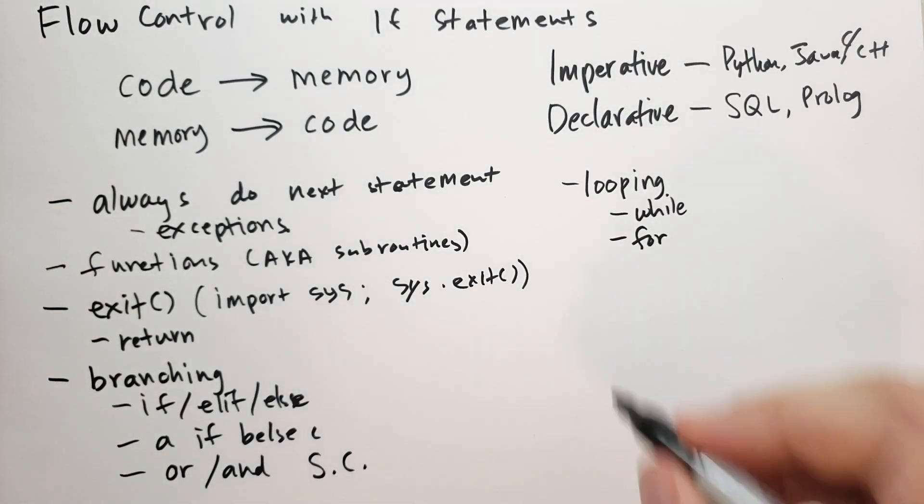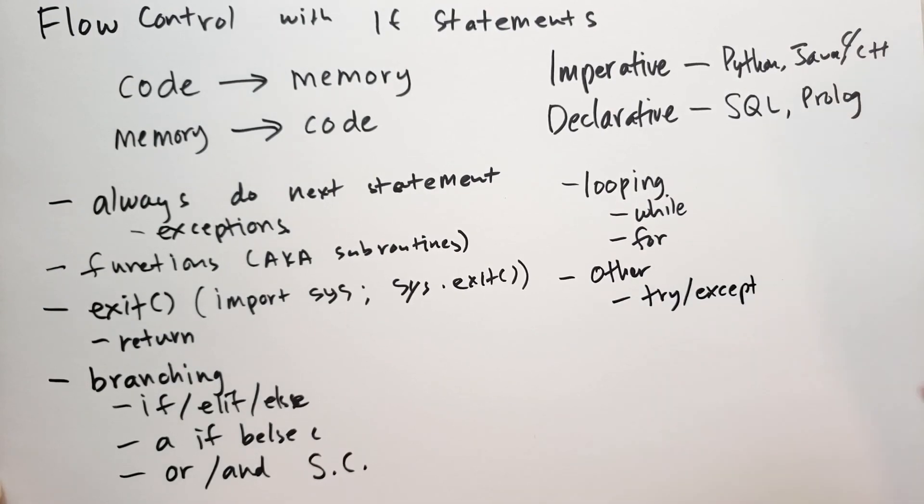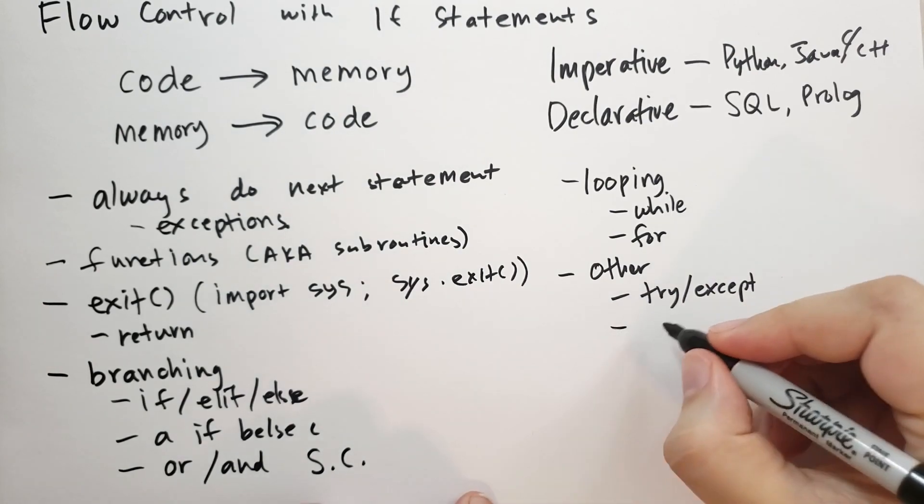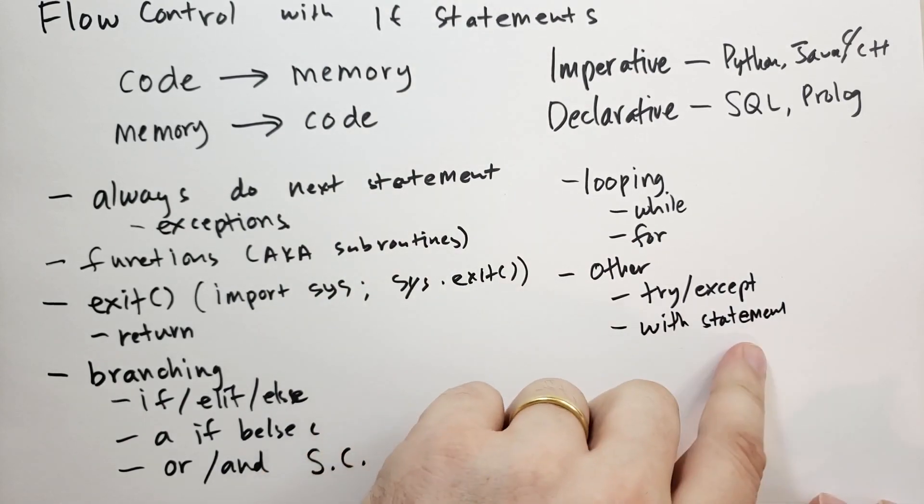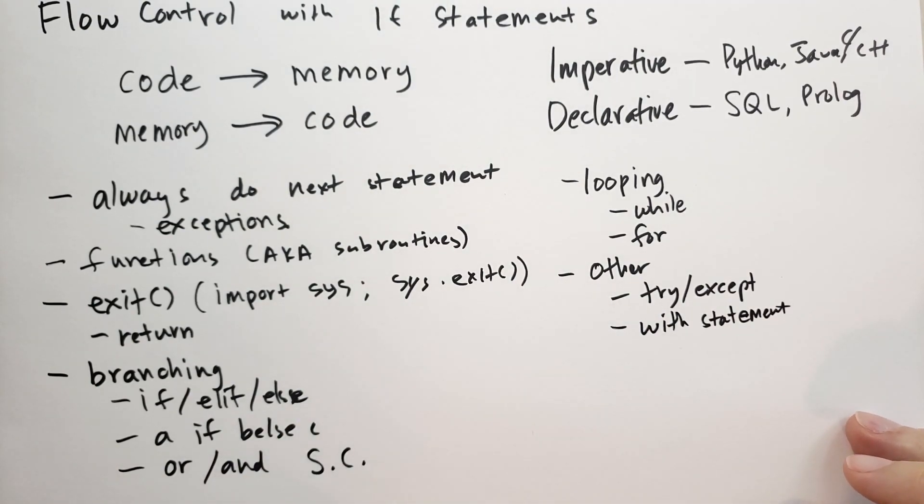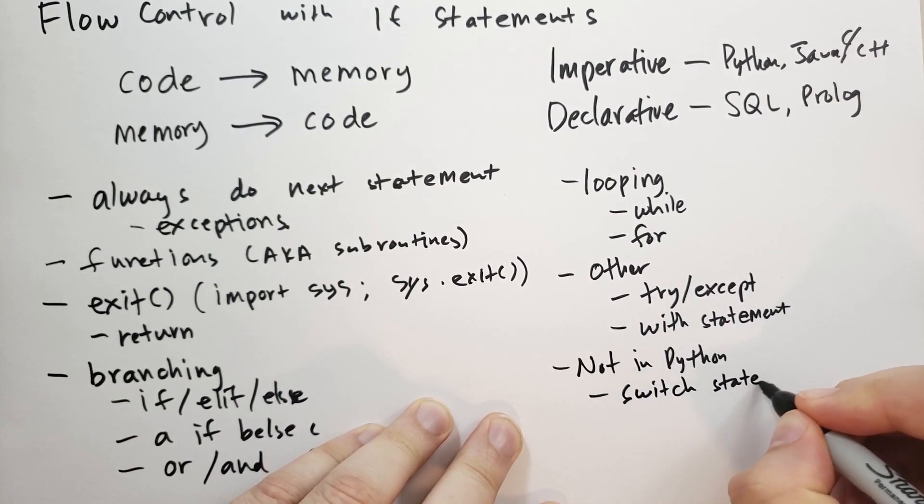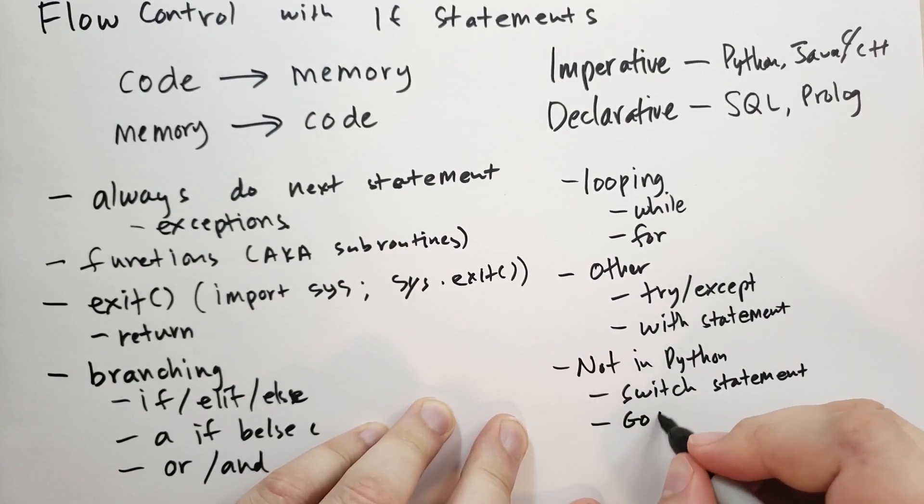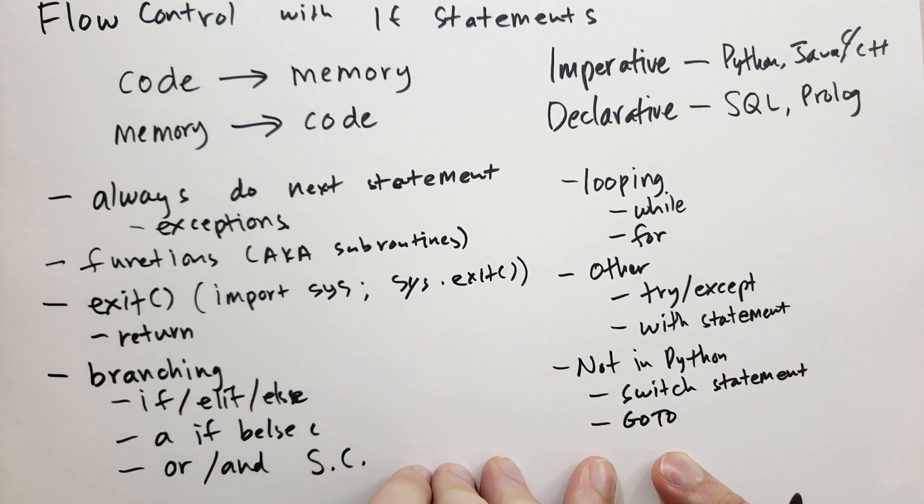Then we have try—let's call these other or miscellaneous. We have try except exception handling. If there's an exception raised, run this special bit of code. We also have the with statement, which we haven't looked at yet. The with statement runs some special code before a block of code is run. Some things that aren't in Python that you might see in other languages: the switch statement. There's a good way to simulate this in Python. And there's also goto, which isn't present in Python at all. You actually don't need goto if we have if and while and other things like that.